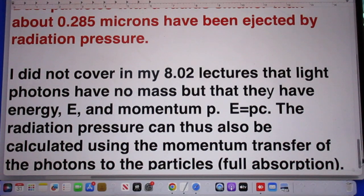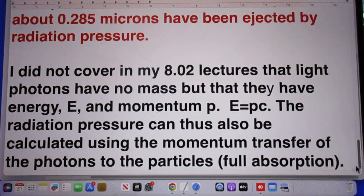I did not cover in my 802 lectures that photons have no mass, but that they have energy E and momentum P and that E equals PC. The radiation pressure can also be calculated using the momentum transfer of the photons when they hit the particle and when the particle fully absorbs that momentum.